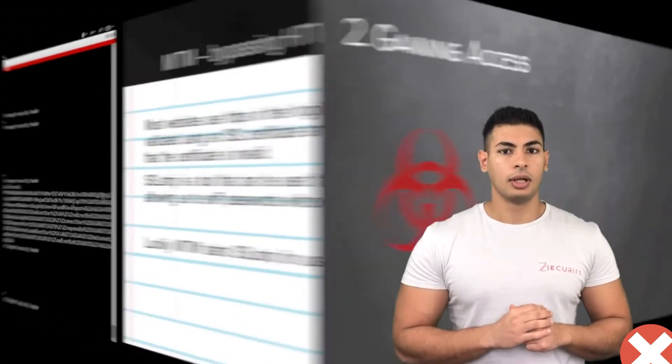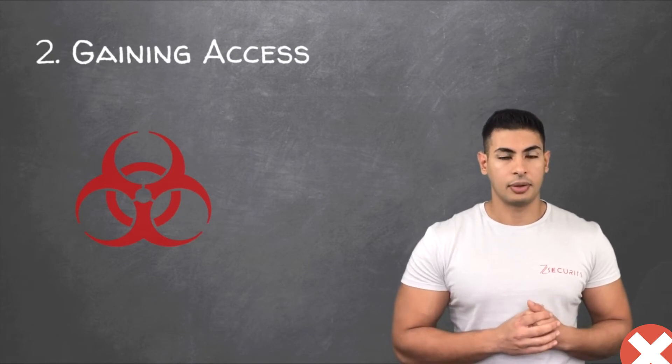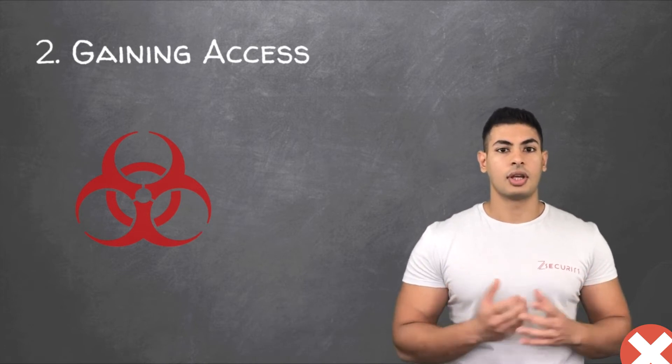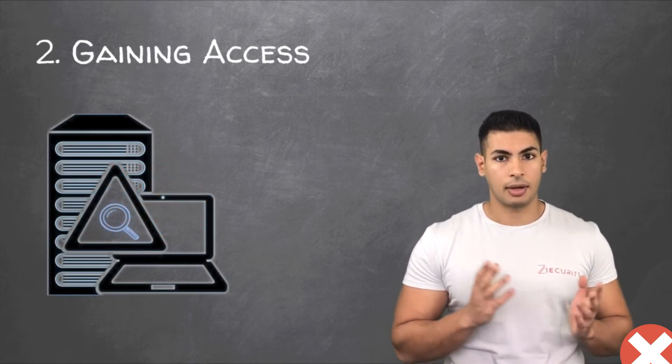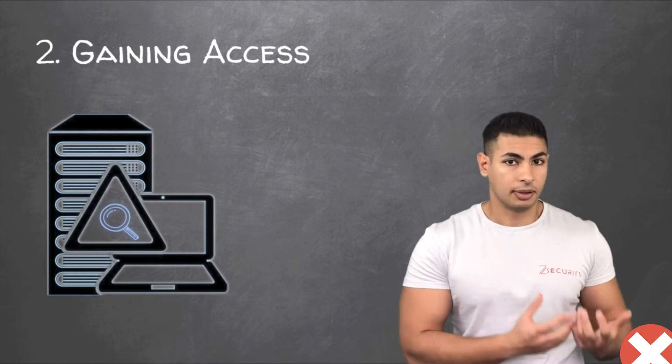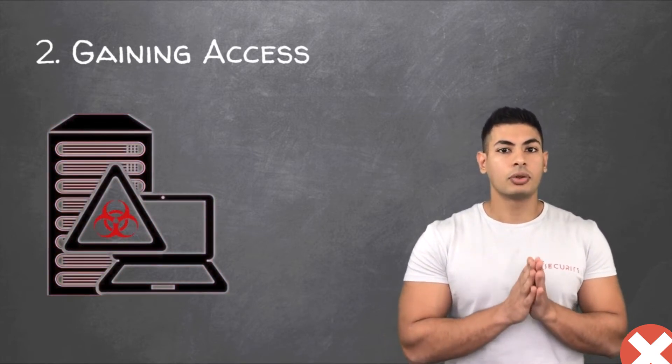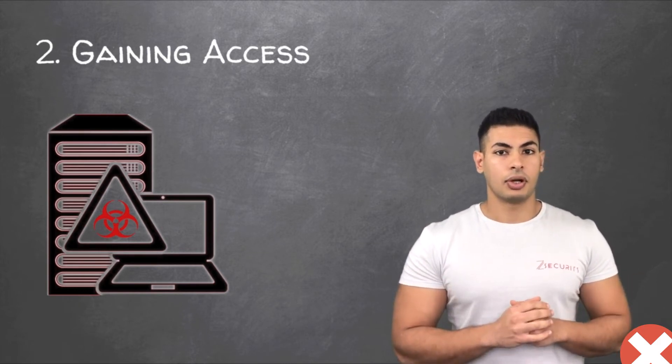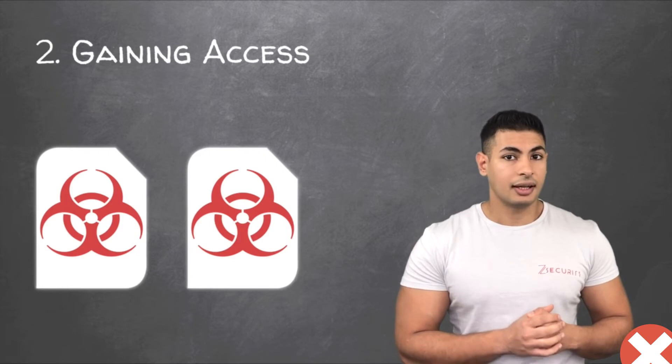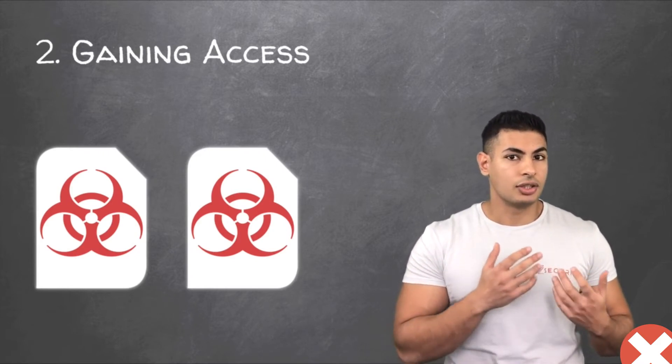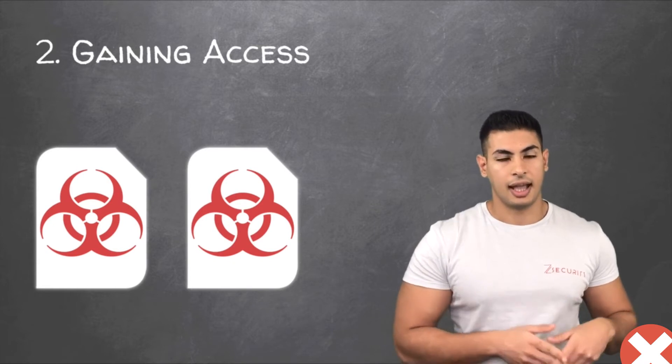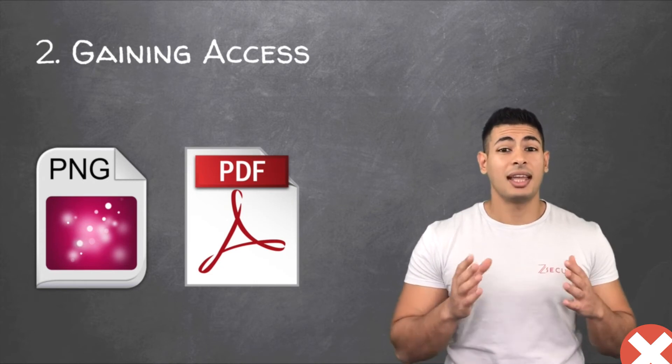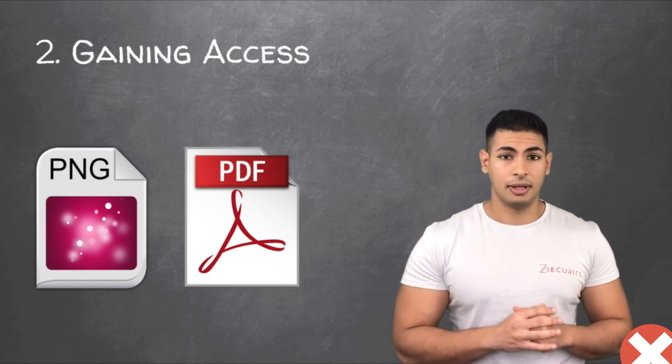Once done with this, we'll move to the gaining access section where you'll learn how to gain access to servers and personal computers. So first you'll learn how to gather comprehensive information about your target, discover vulnerabilities, and exploit them to gain full control over the target system. Not only that, but you'll also learn how to generate undetectable backdoors and use social engineering to deliver them to your target as a fake update or as a PDF or an image or any other file that they might be interested in.